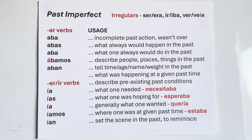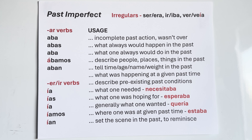Our lesson now is the past imperfect — the second of the two past tenses in the Spanish language. The past preterite, which we have studied, we use to reflect an action in the past that is completed. It is over, it is done, it is finished. Like: I went to the game, it rained yesterday, I saw the movie, the phone rang, the car ran out of gas. Those are things that happen and are over.